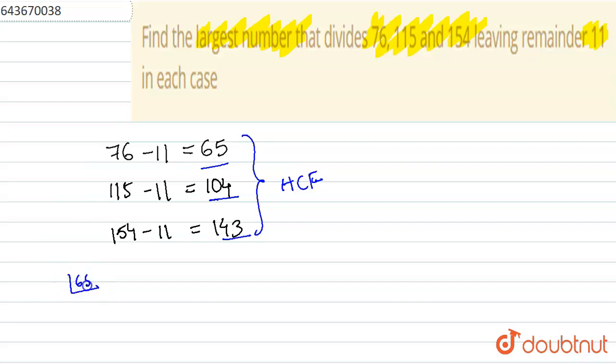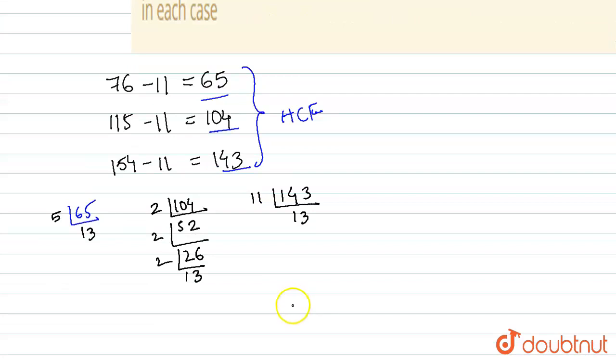First we have 65, so 5 times 13 equals 65. Next we have 104, so this is 2 times 52, then 2 times 26, then 2 times 13. Similarly, for 143 we have 11 times 13 equals 143.